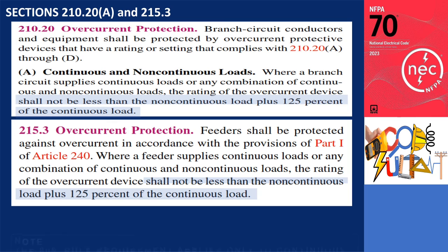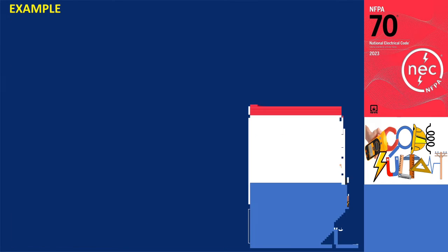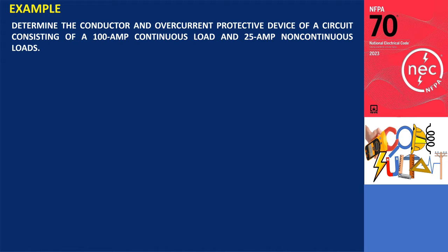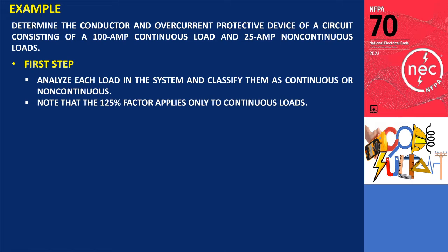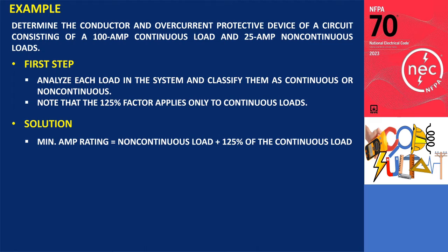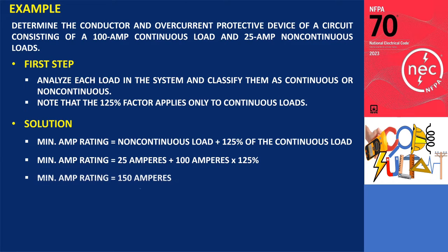It is important to note that the 80% rule requirement applies only to continuous loads. Let's have an example. Determine the conductor and overcurrent protective device for a circuit consisting of a 100A continuous load and a 25A non-continuous load, with correction and adjustment factors of 100%. Referring to Section 210.20A, the 125% factor applies only to continuous loads. The calculation is: non-continuous load plus 125% of the continuous load. Therefore, 25A plus (100A × 125%) equals a total of 150A.